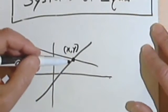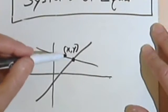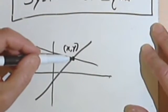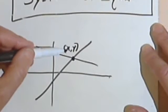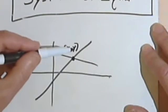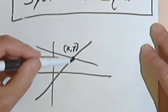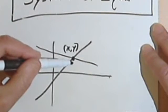If you decided, instead of graphing, that you were going to solve these by elimination or substitution, you would still end up with a specific value for x and a specific value for y. And you'd once again have one solution.